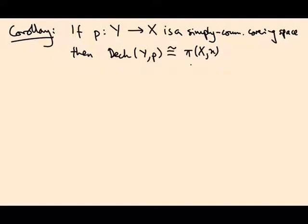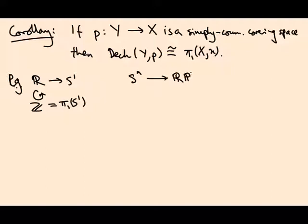This is what we've seen, for example, for ℝ covering S¹. The deck transformation group is ℤ, which is also the fundamental group. We've also seen that the sphere double covers ℝℙⁿ with a ℤ/2ℤ action, which equals π₁(ℝℙⁿ).